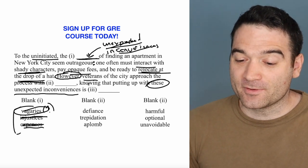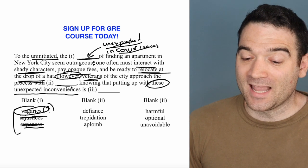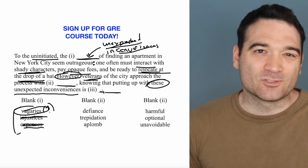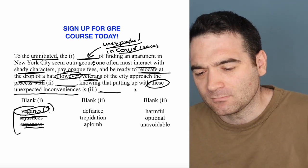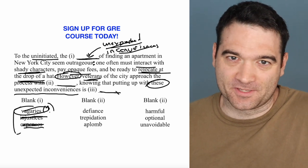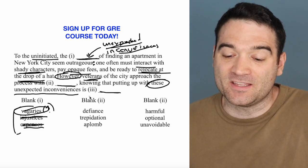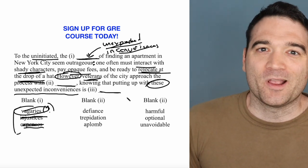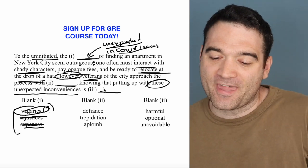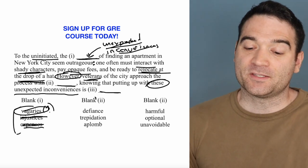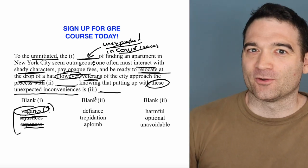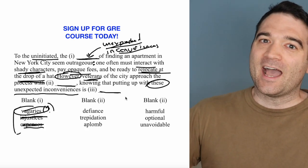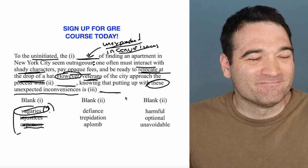However, veterans of the city — people who've been around a while — approach the process with blank, knowing that putting up with these unexpected inconveniences is blank. Let's try to guess our own words. What's the attitude of the veterans? They know that putting up with these unexpected inconveniences is blank — I'm going to guess something like 'par for the course,' normal, just what you've got to do. And so if they approach these inconveniences with that normalcy, then how do they approach it? Maybe with a sort of fatalism — that's just the way it is.